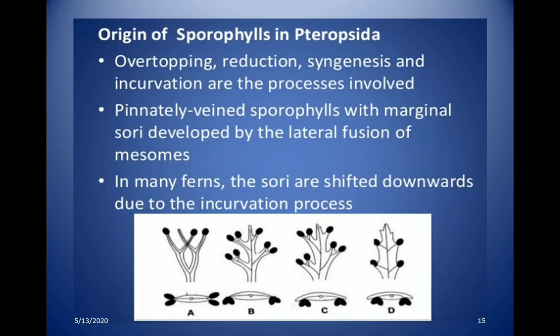For the origin of sporophylls in Pteropsida, overtopping, reduction, syngenesis, and incurvation are the processes involved. Unlike recurvation, in incurvation only the bending of the sporangia takes place — not their stalks. In many ferns, the sori are shifted downward due to the incurvation process.